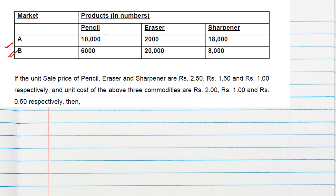The unit sale price of pencil, eraser, and sharpener is rupees 2.5, 1.5, and 1 respectively. Unit sale price means the sale price for one unit of each item. The unit cost of the above three commodities is rupees 2, 1, and 0.5 respectively — meaning the cost of one pencil, one eraser, and one sharpener.